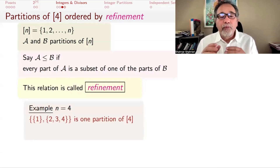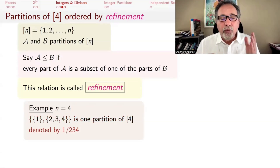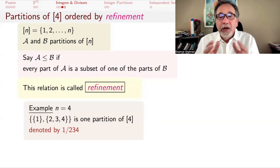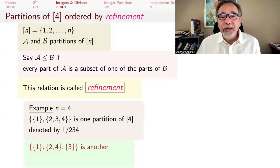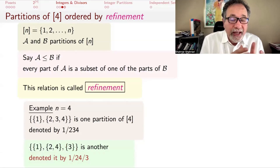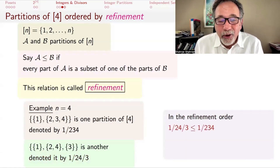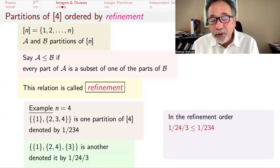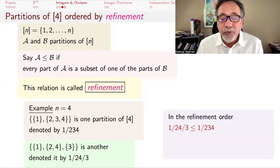Here's an example. If n = 4, one way to partition {1,2,3,4} is {1} | {2,3,4}, written as 1/234. Another partition is {1} | {2,4} | {3}, written as 1/24/3. In the refinement order, 1/24/3 is less than 1/234, because every part of the finer partition is a subset of one part of the coarser one: {1} ⊆ {1}, {2,4} ⊆ {2,3,4}, and {3} ⊆ {2,3,4}.